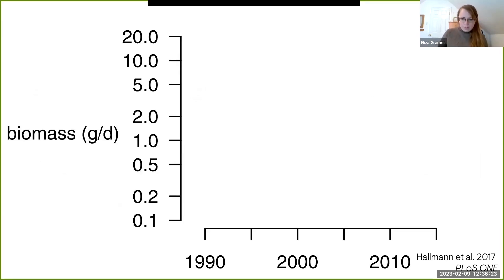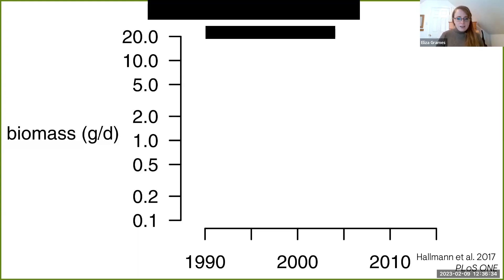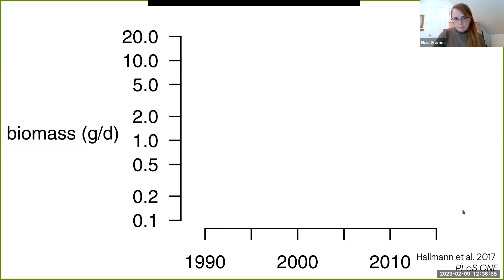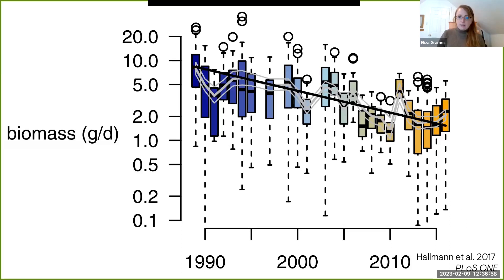A few years ago, people started getting really concerned about insect decline. We've known for a long time, based on first principles and being in the middle of a biodiversity crisis, that insects are in trouble. There was a study by Hallmann et al. that came out in 2017 which really catalyzed a lot of the current discussion surrounding insect declines globally. They had been tracking flying insect biomass over almost three decades in Germany — the y-axis is biomass in grams per day and the x-axis is time — and you can see a fairly consistent steady downward trend. Insects fluctuate really wildly from year to year, but there is a downward trend overall, and this was a really great long-term data set for assessing questions like this.